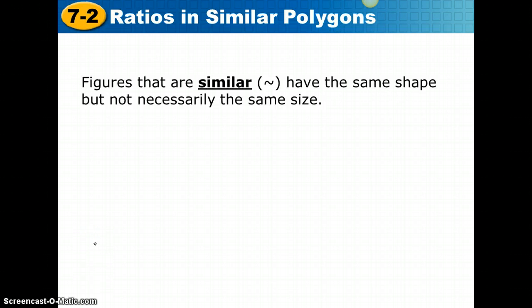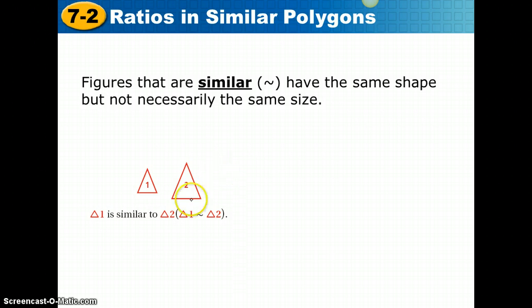Figures that are similar, and we use this symbol called the tilde to represent similar figures, have the same shape but not necessarily the same size. In this case, triangle 1 is similar to triangle 2, and this is how we would write that: triangle 1 is similar to triangle 2.